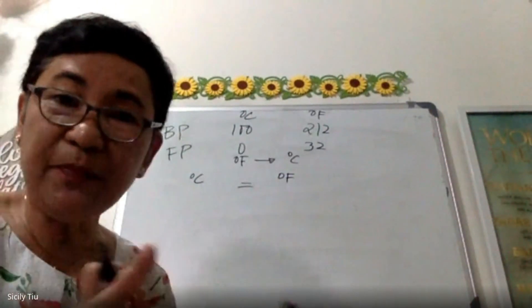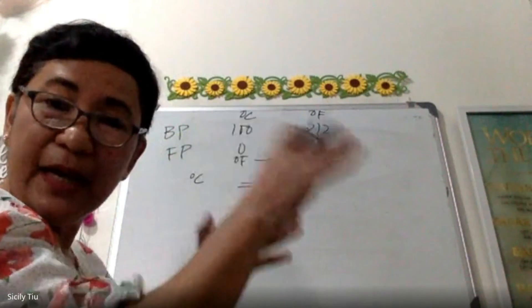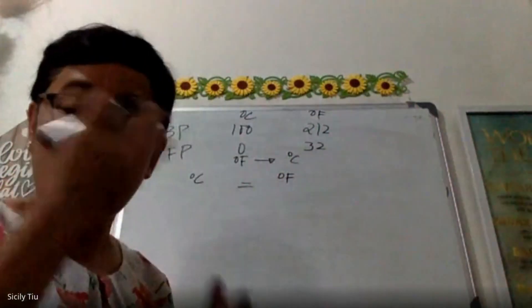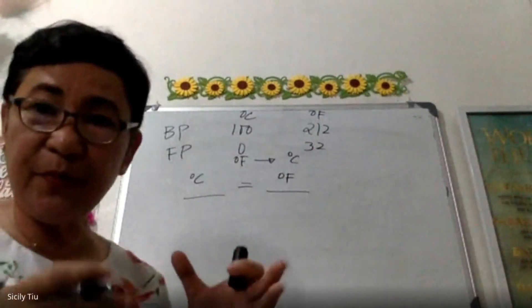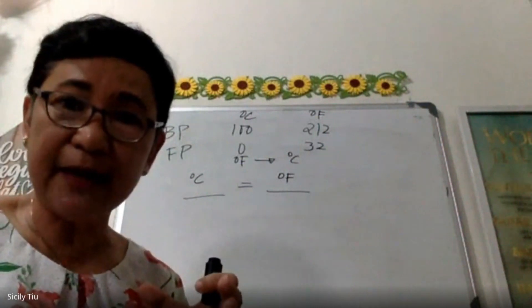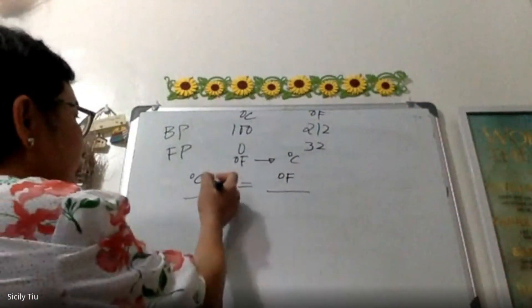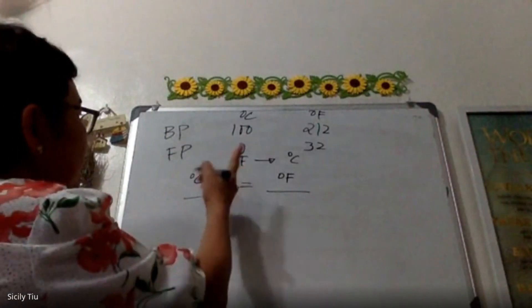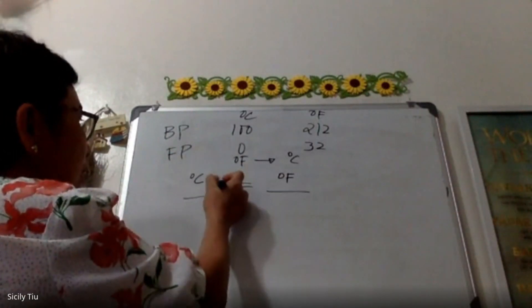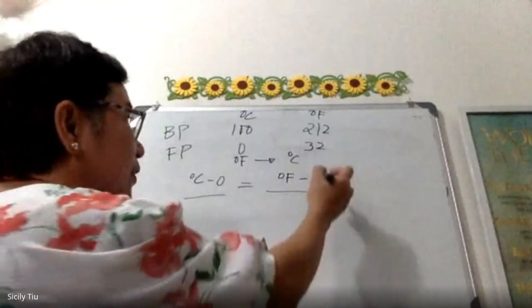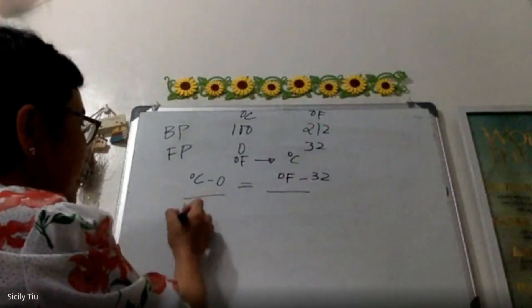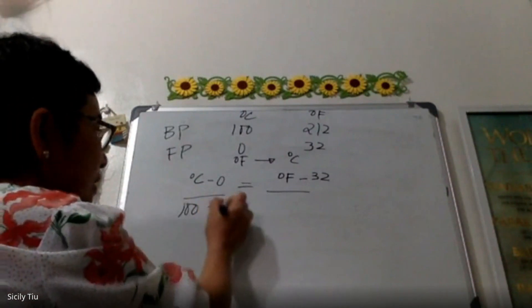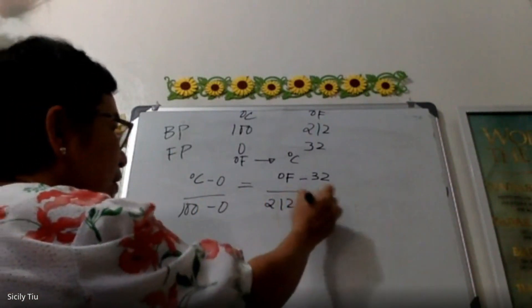Now, sabi mo, ratio and proportion yung application, meron kang ilalaman sa kaliwa, may ilalaman ka sa kanan. And then, dapat nagsasalita. And consistent ka. When you apply ratio and proportion, there should be a consistency. Right? Now, pag nag-track ako nung boiling point, freezing point zero. Alright? ito ay 32. Okay? And then, 100 minus 0, 212 minus 32.